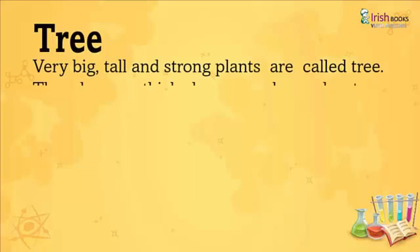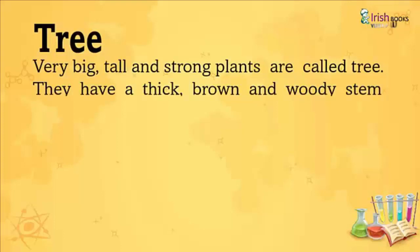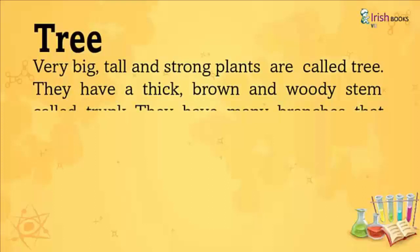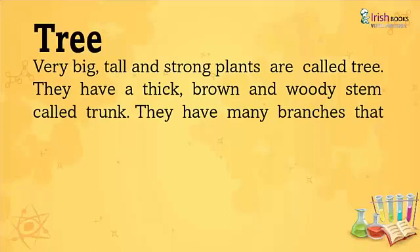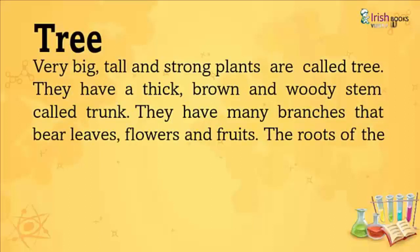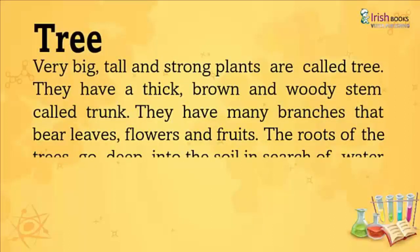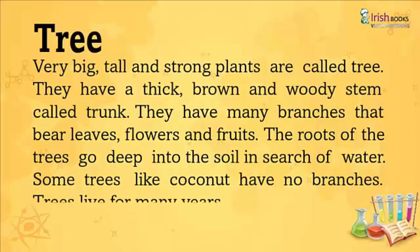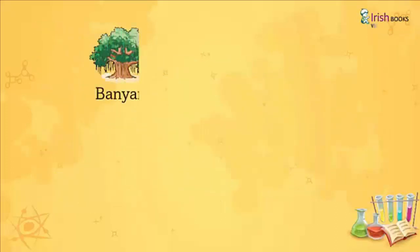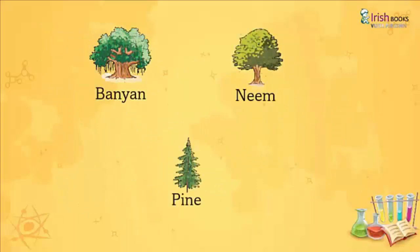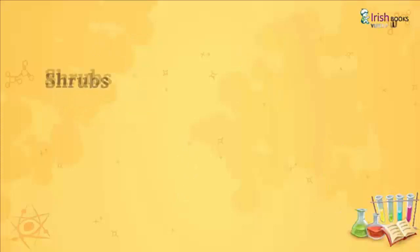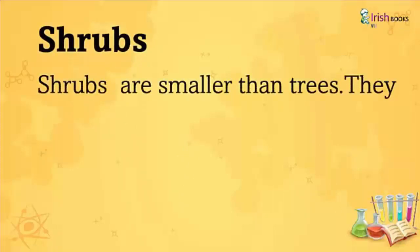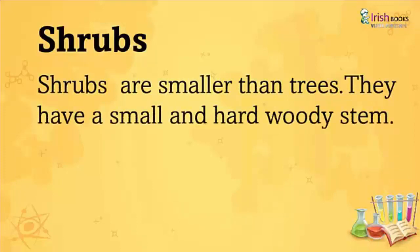Trees: Very big, tall and strong plants are called trees. They have a thick, brown and woody stem called a trunk. They have many branches that bear leaves, flowers and fruit. The roots of the tree go deep into the soil in search of water. Some trees like coconut have no branches. Trees live for many years.